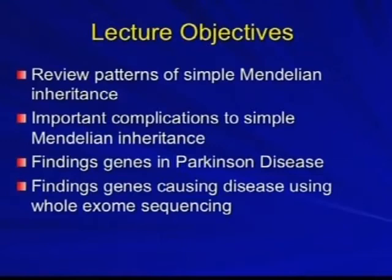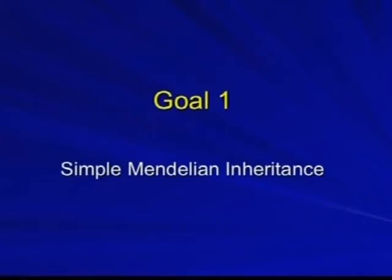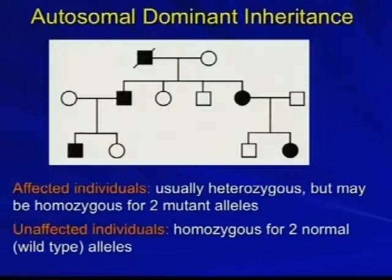So let's do simple Mendelian inheritance. If you're trained at all in genetics, just bear with me — it's a couple slides, but for people who aren't familiar, it's important to understand. This is autosomal dominant inheritance. When you're looking at a chart like this, a circle is a woman and a square is a man. All right, so this lecture will perhaps have some meaning to most of you.